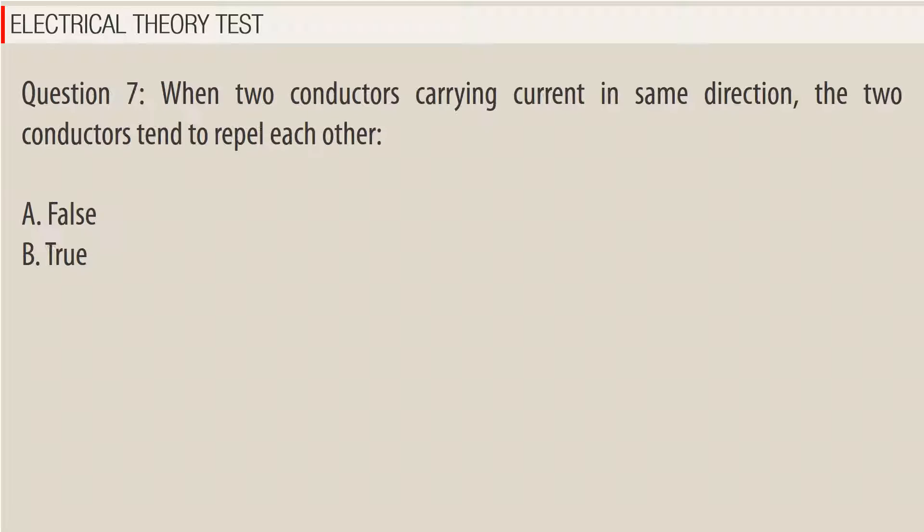Question 7. When two conductors carrying current in the same direction, the two conductors tend to repel each other? a. False. b. True.